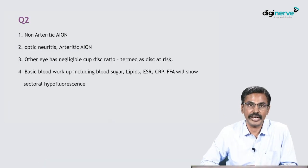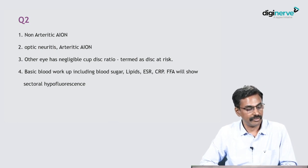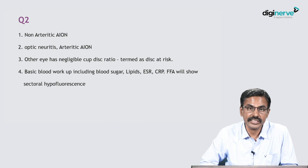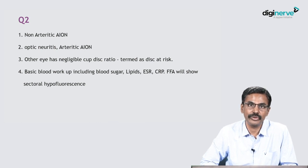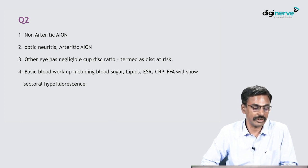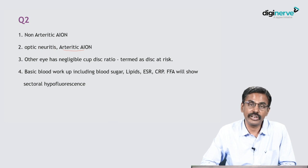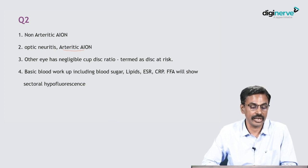The most likely diagnosis is non-arteritic anterior ischemic optic neuropathy. Why anterior ischemic optic neuropathy and not optic neuritis? We saw that this is a painless defective vision, whereas optic neuritis usually has painful defective vision with pain aggravated on eye movements. The differential diagnosis includes optic neuritis as well as arteritic anterior ischemic optic neuropathy.